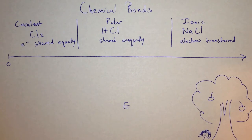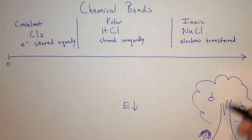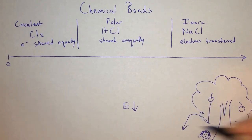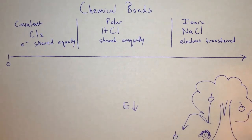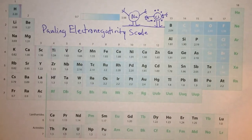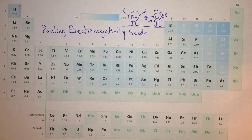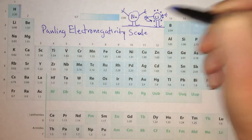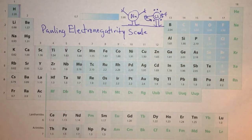This happens because the compounds, when they bond, try to reduce their energy — just like an apple falls off Newton's head in order to reduce its gravitational potential energy. We categorize these compounds by their electronegativity.